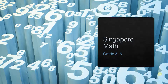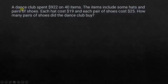Hi everyone, today we are going to see another Singapore math problem. This problem was sent to us by one of our viewers, Nadia Akhtar — thanks for sending this question, Nadia. A dance club spent $922 on 40 items. The items include some hats and pairs of shoes. Each hat costs $19 and each pair of shoes costs $25. How many pairs of shoes did the dance club buy?